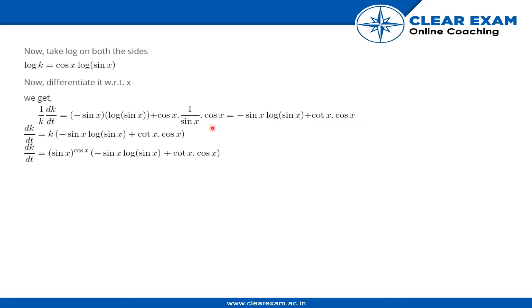We have used the product rule to evaluate the differentiation of the RHS. Cross multiplying k on the other side, we get dk by dx equals sine x to the power cos x, whole into minus sine x log sine x plus cot x into cos x.